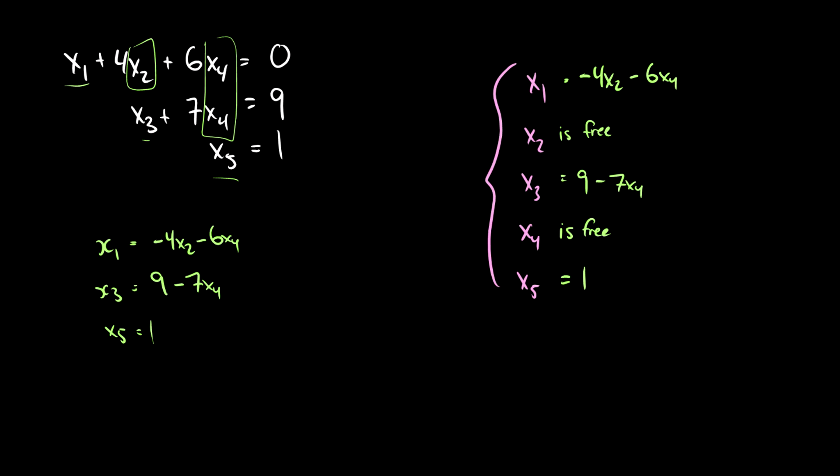So we can do this and say, okay, well, 4x2 is equal to negative 6x4 minus x1. So we can say that x2 is negative 6 fourths x4 minus 1 fourth x1.